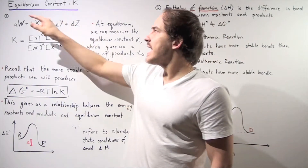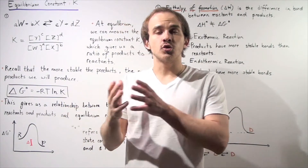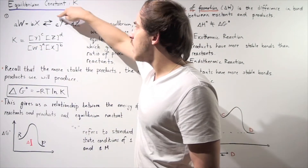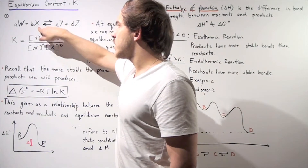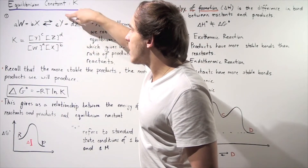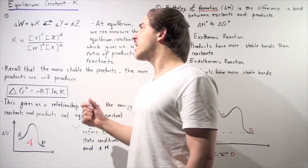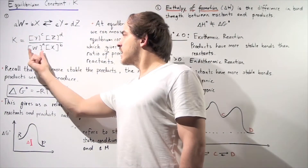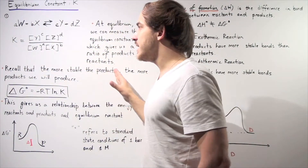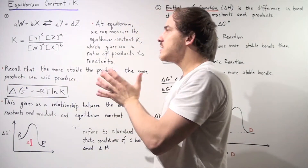At equilibrium, we can use something known as the equilibrium constant, given by the letter K, to see how far to the left or how far to the right our equilibrium lies. This is given by the ratio of the concentrations of products divided by the concentration of reactants. K equals the concentration of Y to the C power, multiplied by the concentration of Z to the D power, divided by the concentration of W to the A power and the concentration of X to the B power.